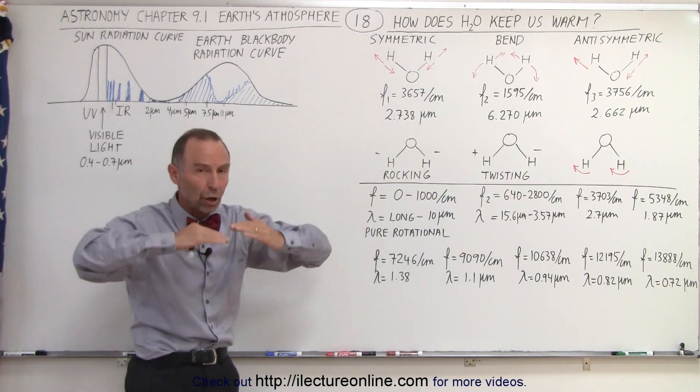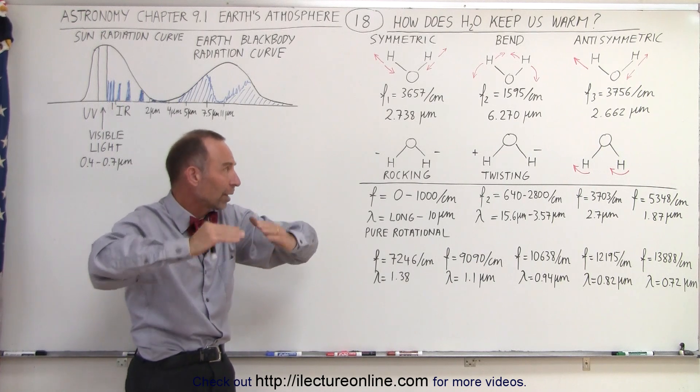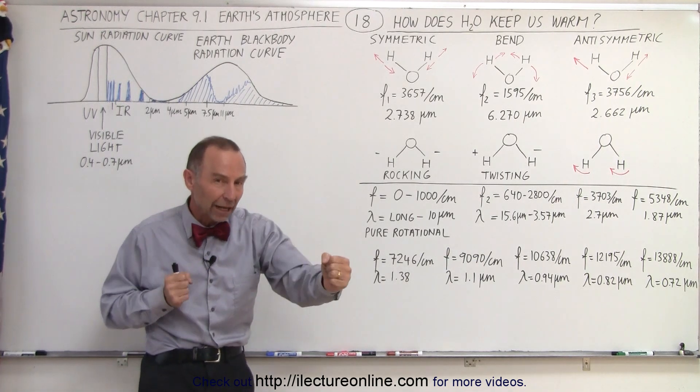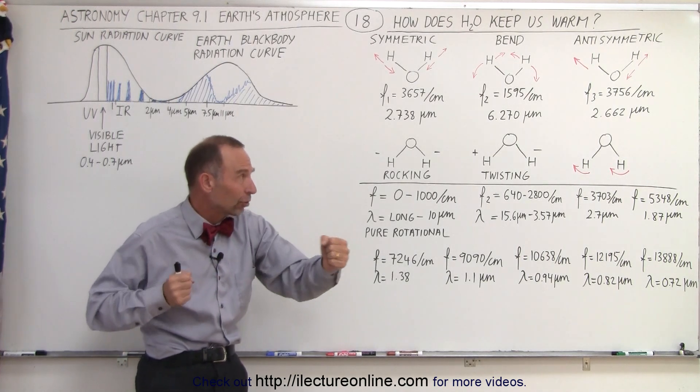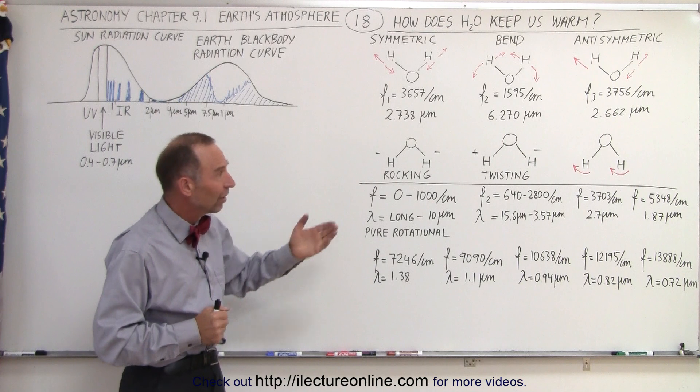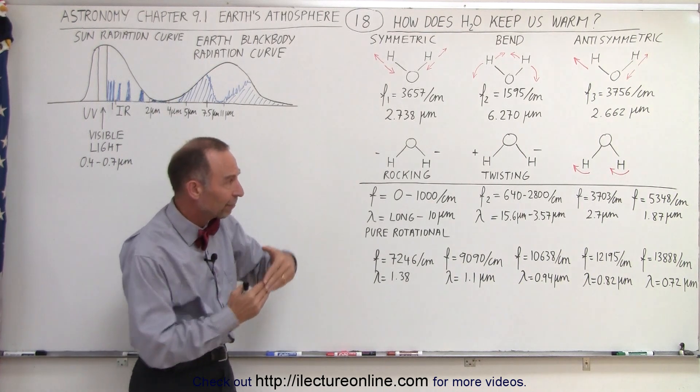In addition, we have what we call the rocking motion, where the hydrogen can rock back and forth like this relative to the oxygen. We have a twisting motion, where the hydrogen atoms can move back and forth like this in opposite directions. And then we have another rocking motion, where the hydrogen molecules can move back and forth like that.